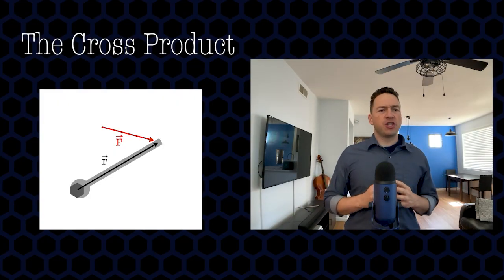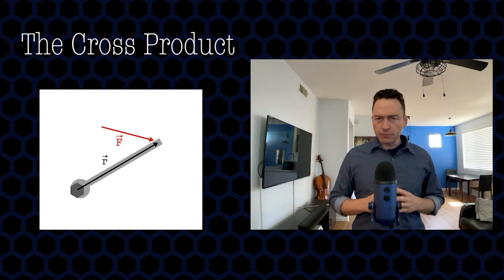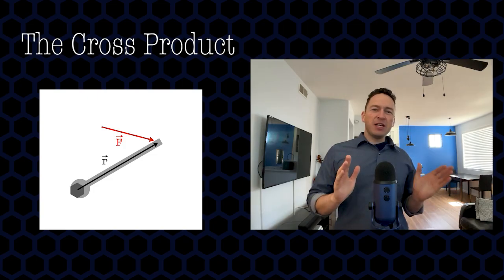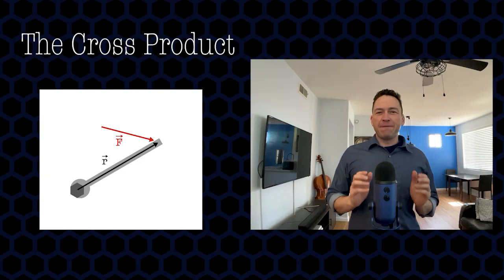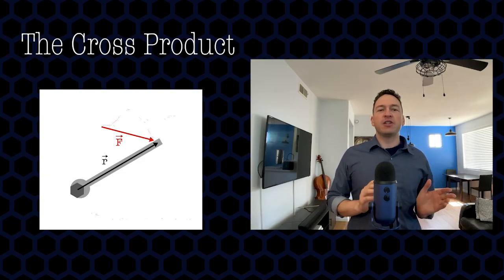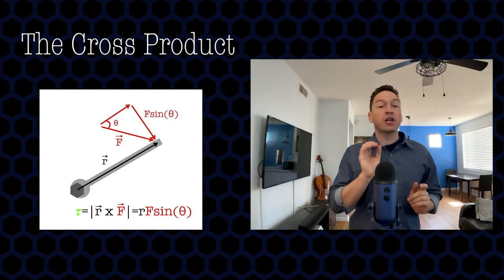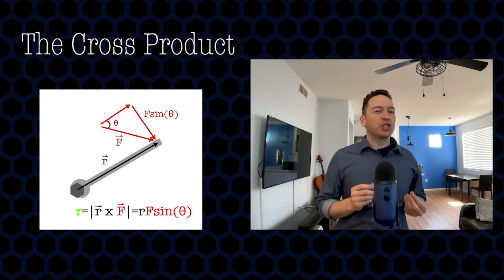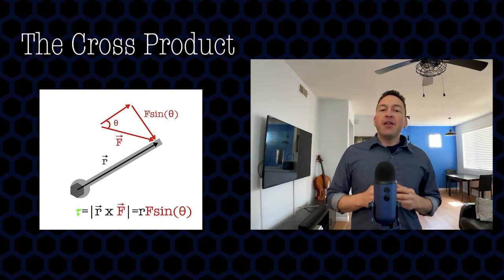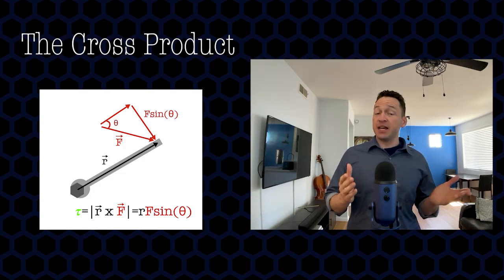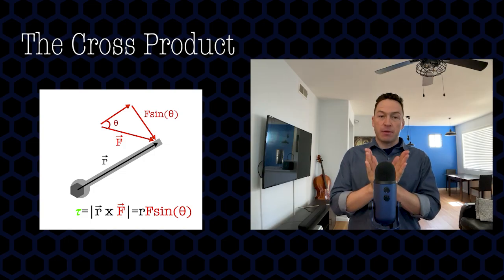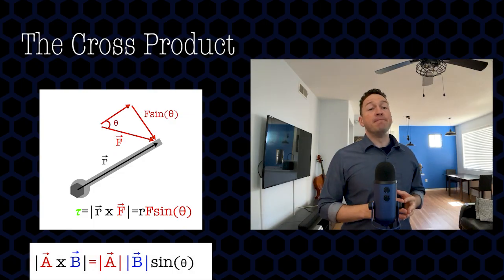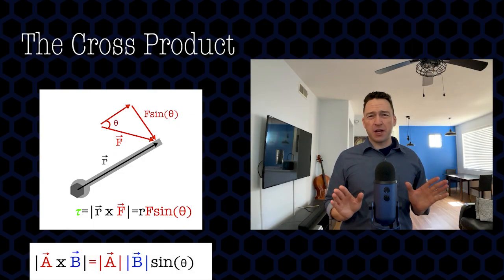Not all forces cause a change in rotation in this straightforward way, though. Let's say that you're rotating a wrench but you choose to push it at a weird angle. If a force pushes on something like this, then the way to find the torque is by multiplying the length of the lever by only the component of the force that is perpendicular to the lever, since that's the only part of the force that actually causes a change in rotation. This means that the torque is actually equal to R times F times sine of theta, where theta is the angle separating the direction of the force and the direction of the lever arm. This general formula actually finds the magnitude of the cross product.